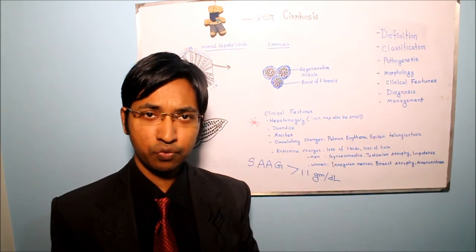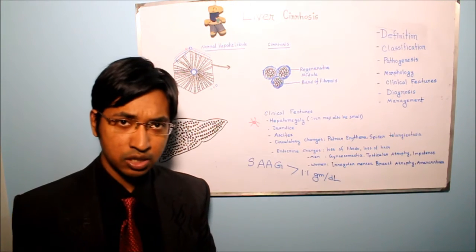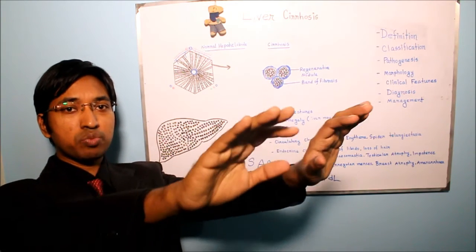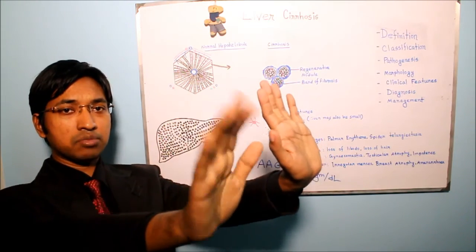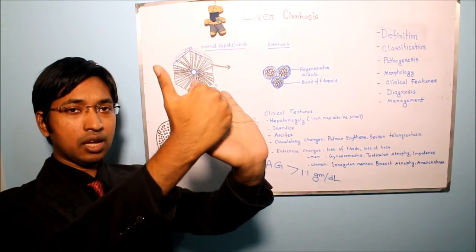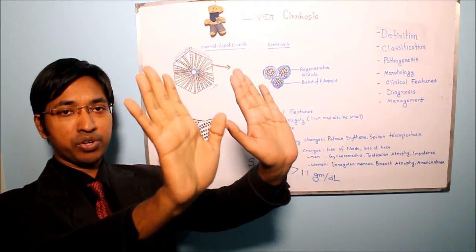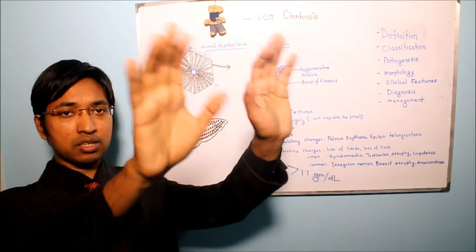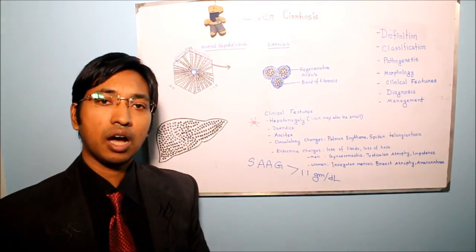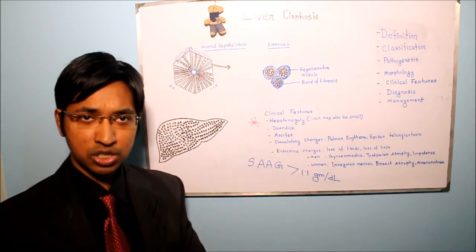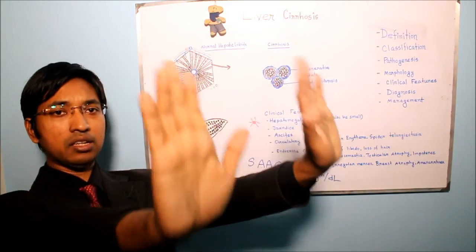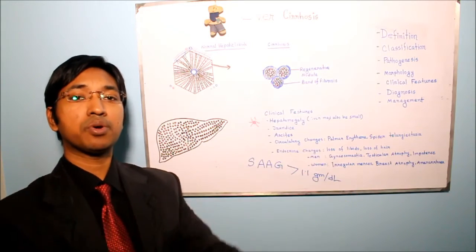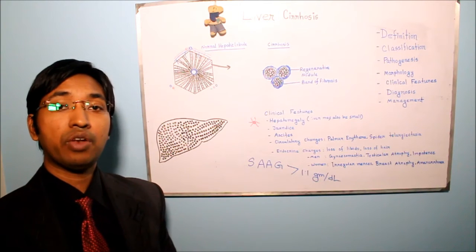To examine for flapping tremor, the patient is asked to hold their arms extended and wrists in a dorsiflexed position. The tremor is called flapping tremor due to its similarity with the wings of a flapping bird.